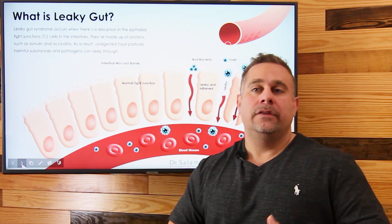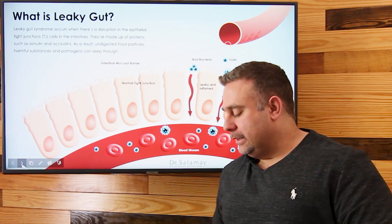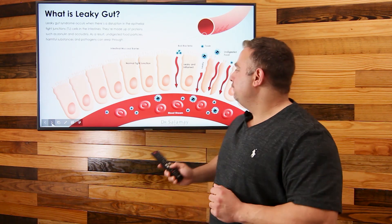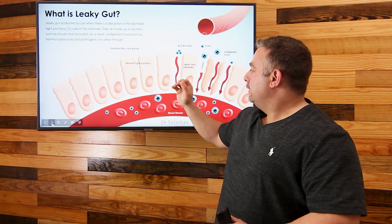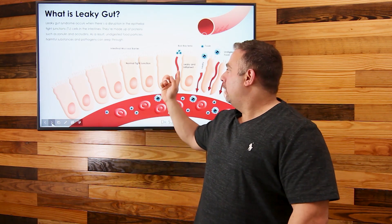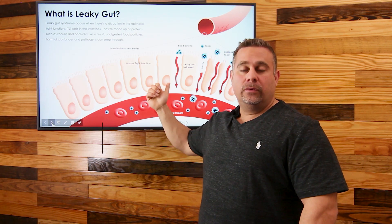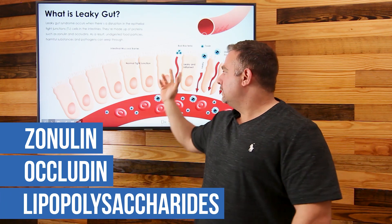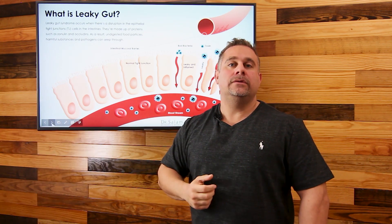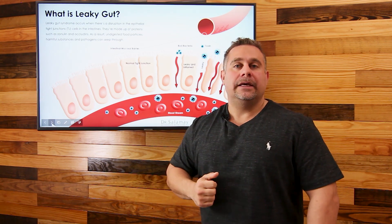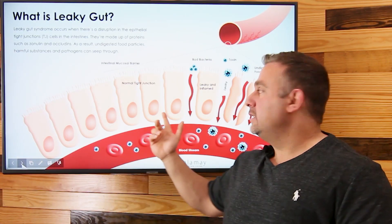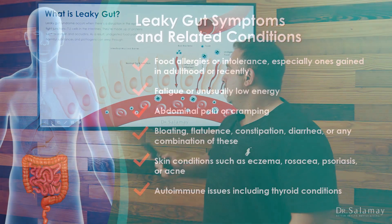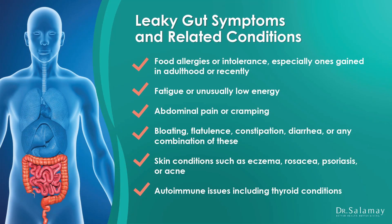There are causes and reasons behind that, and we'll get into some of the things that can cause leaky gut in a minute. There are a few chemicals known to be involved — one of them is zonulin, occludin, and lipopolysaccharides. Once these are in the bloodstream, they can become an issue. There are tests that can identify these and the antibodies against them, indicating if you truly have leaky gut — advances from modern science and functional medicine.